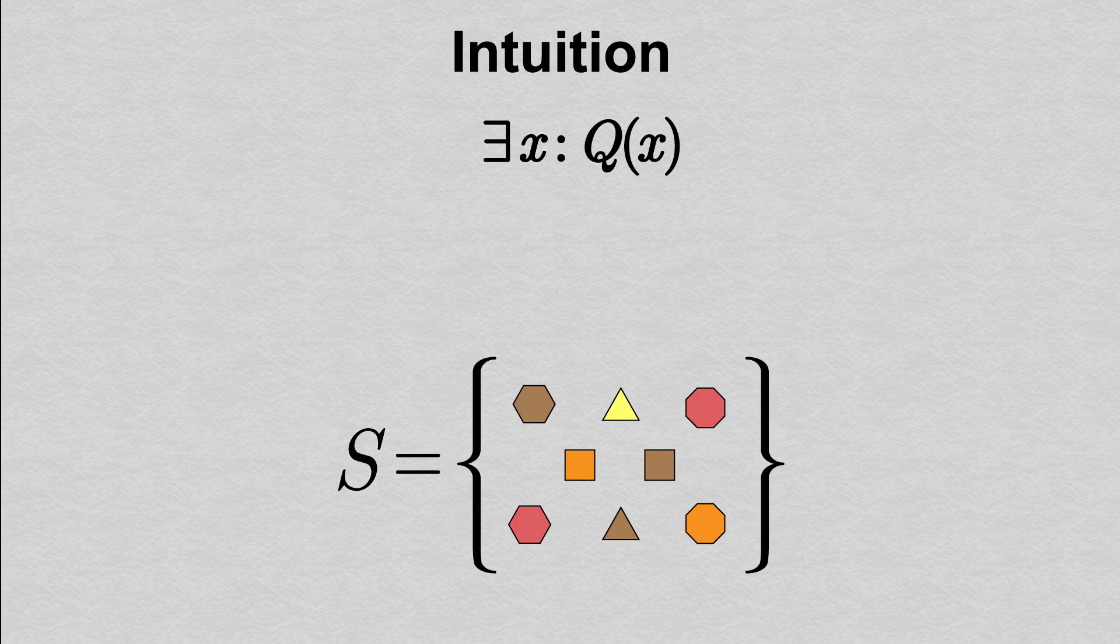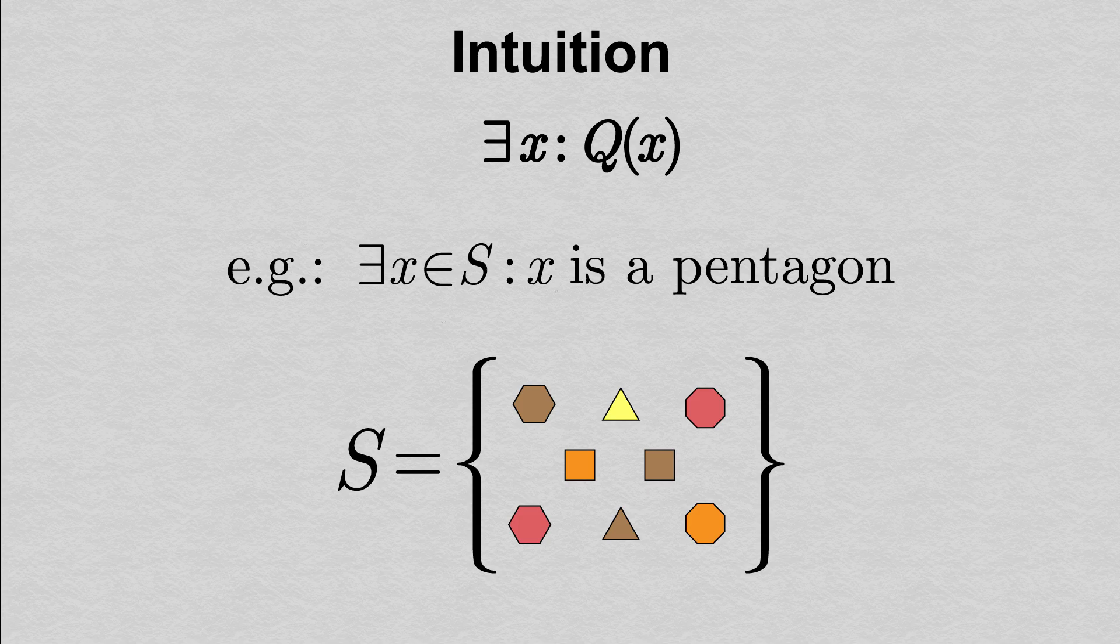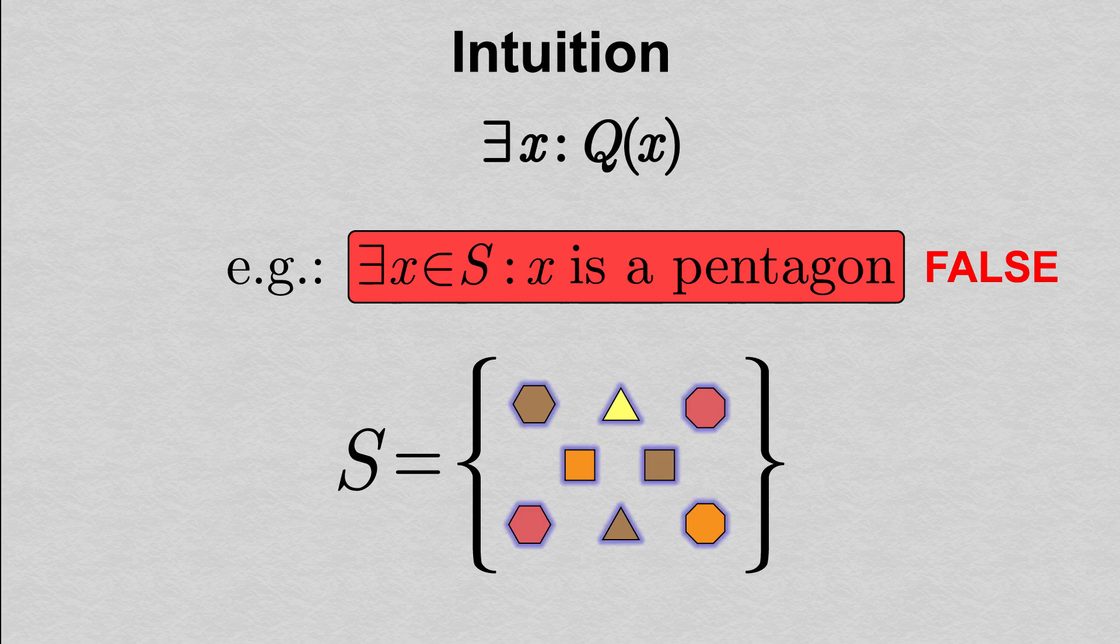On the other hand, we can observe that none of these shapes is a pentagon. The statement that there exists x in S such that x is a pentagon is a well-formed there exists statement. It just happens to be false because we can see that not a single one of these shapes is a pentagon.